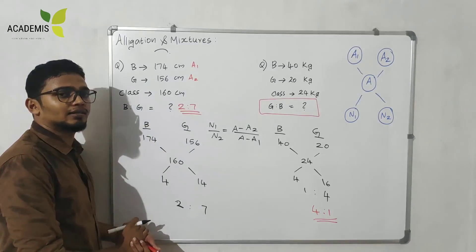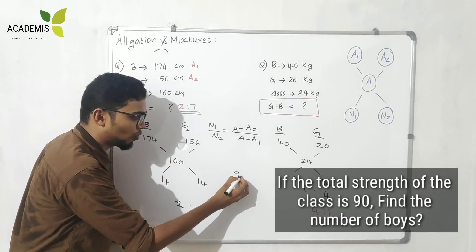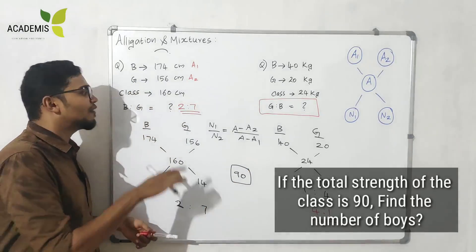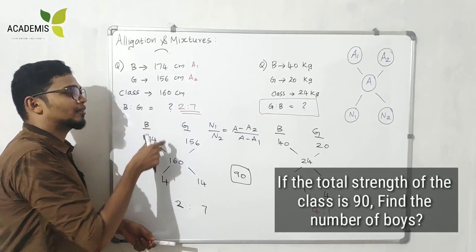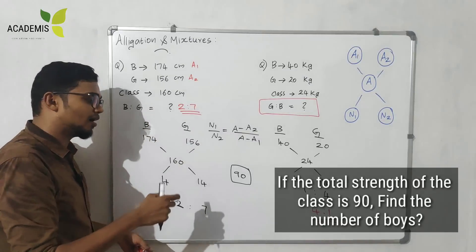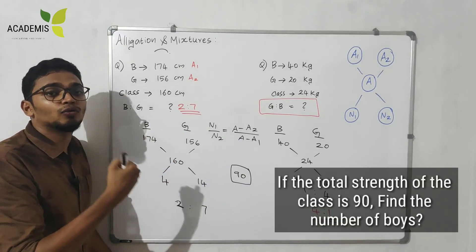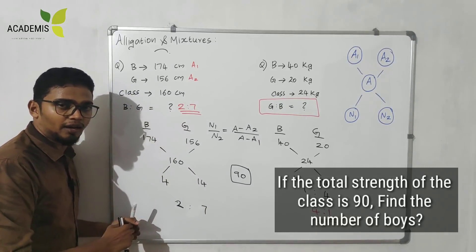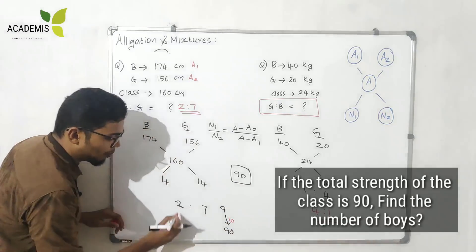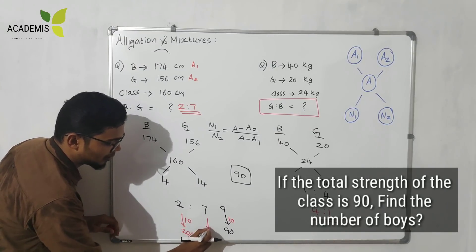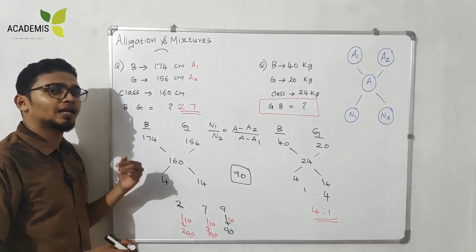If the total number of students in that class is 90, find the number of boys. The ratio of boys and girls is 1 to 4. If the total strength of the class is 90, find the number of boys. If the actual number of boys is based on the ratio — the common factor is 10 — so boys are 10 and girls are 40, meaning the number of boys are no.